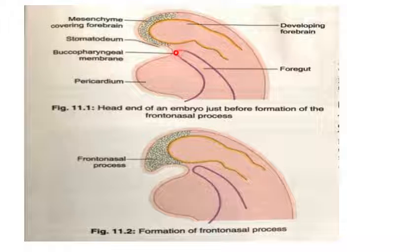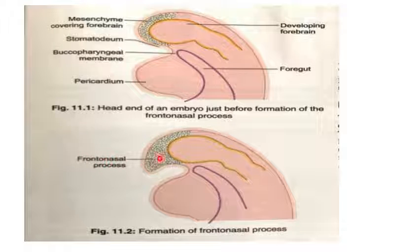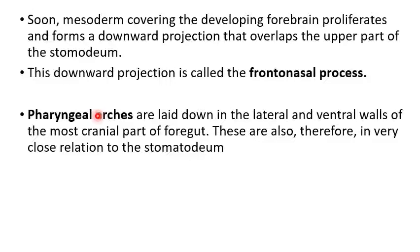So we have two bulgings and one floor formed by the buccopharyngeal membrane, and on its side by the mandibular arch. The mesoderm of the forebrain bulging proliferates to form a frontonasal process. Soon, the mesoderm covering the developing forebrain proliferates and forms a downward projection that overlaps the upper part of the stomodium. This downward projection is known as the frontonasal process.